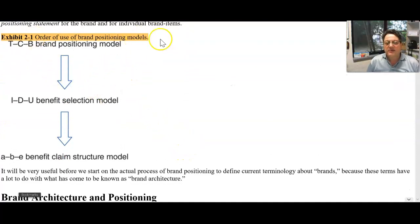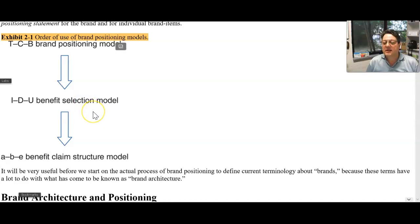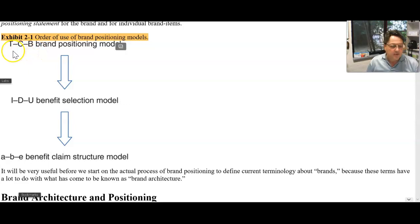We're just trying to figure out how does this fit in someone's mind. What's the interpretation? And what benefits, fundamentally, does the brand have that gets it to have a position of value in someone's mind? It's that simple. You don't get too excited about TCB — target, category, benefit.